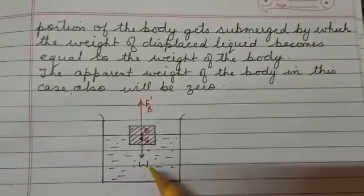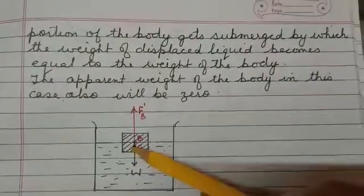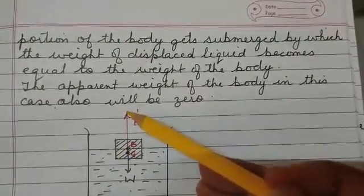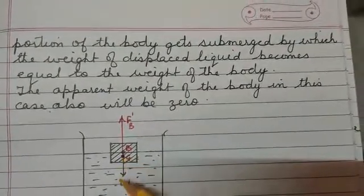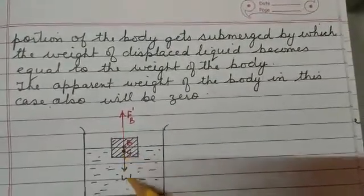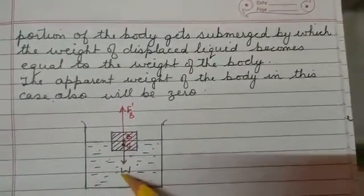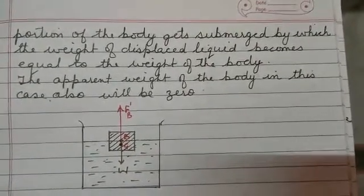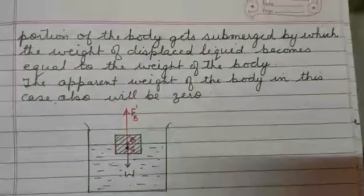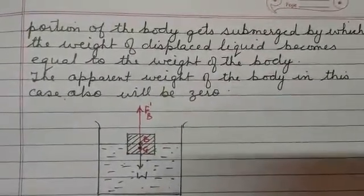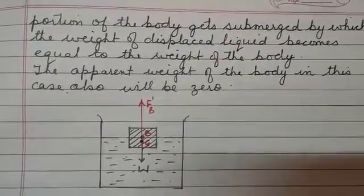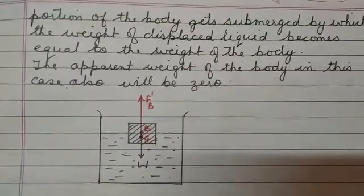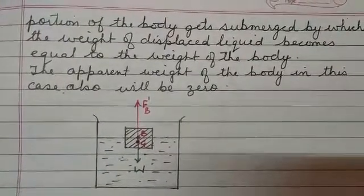In this case, when drawing the diagram, because the up thrust is more, draw a bigger arrow to show the up thrust, and a smaller arrow to represent the lesser weight of the body. The difference, W minus Fb, comes out negative, and since weight cannot be negative, the apparent weight of the body in this situation will also be zero.